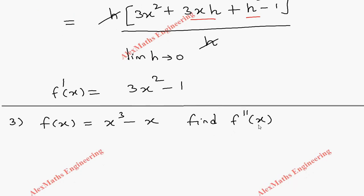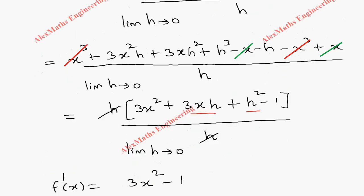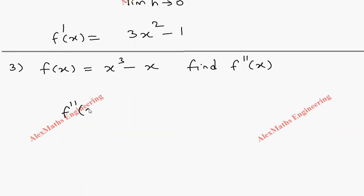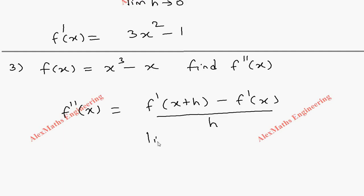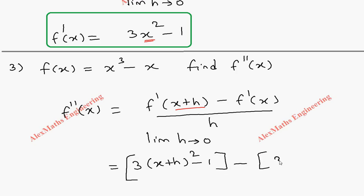The next question is similar but we want the second derivative. We have f(x) = x³ - x. The formula for the second derivative is f''(x) = limit as h → 0 of [f'(x+h) - f'(x)] / h. Since we already found f'(x) = 3x² - 1 in the previous problem, we substitute f'(x+h) = 3(x+h)² - 1.